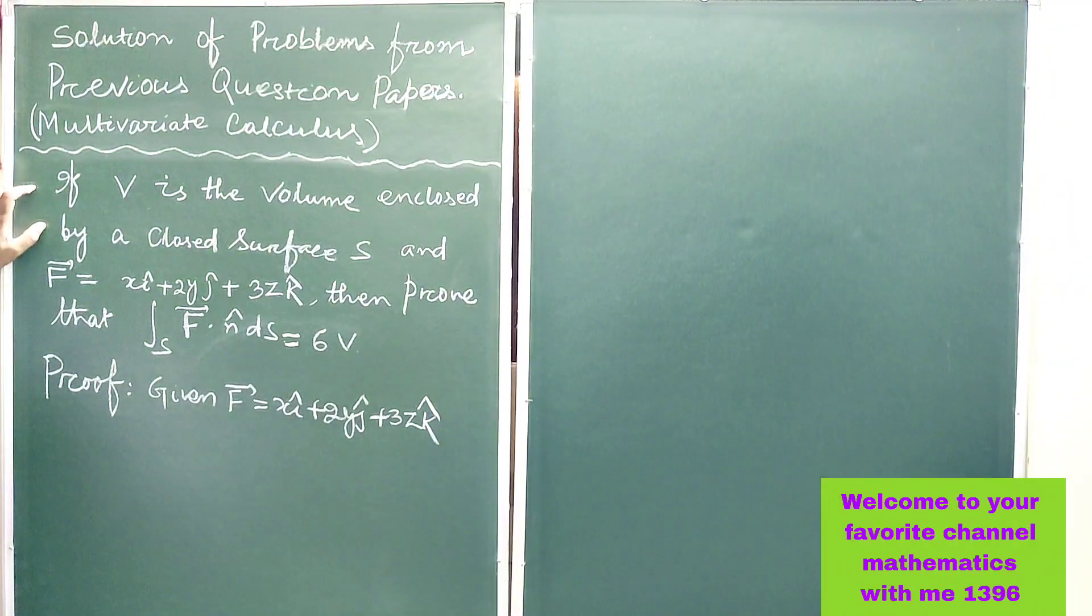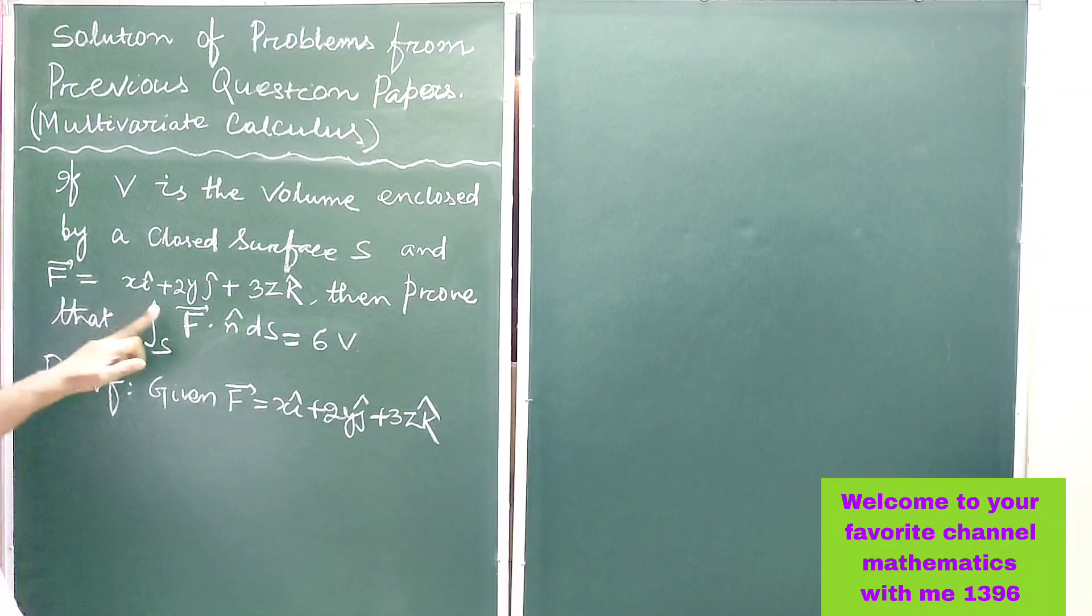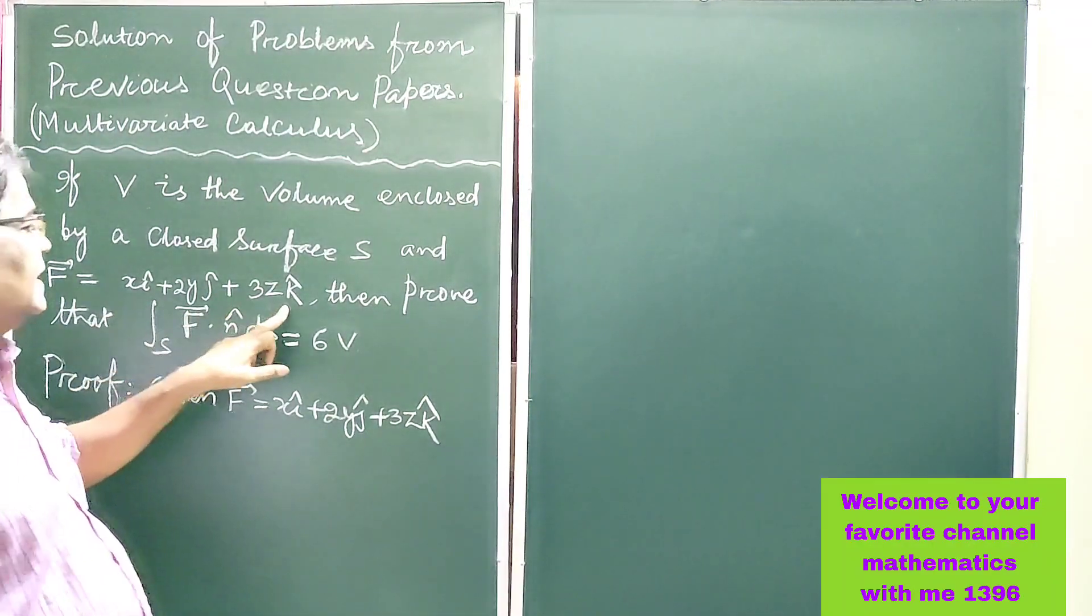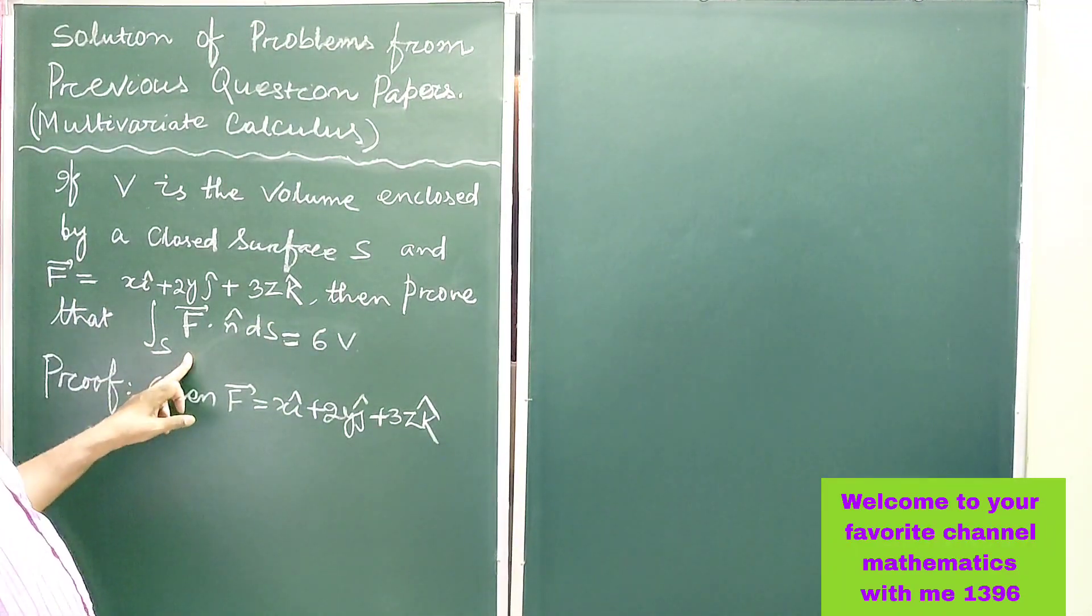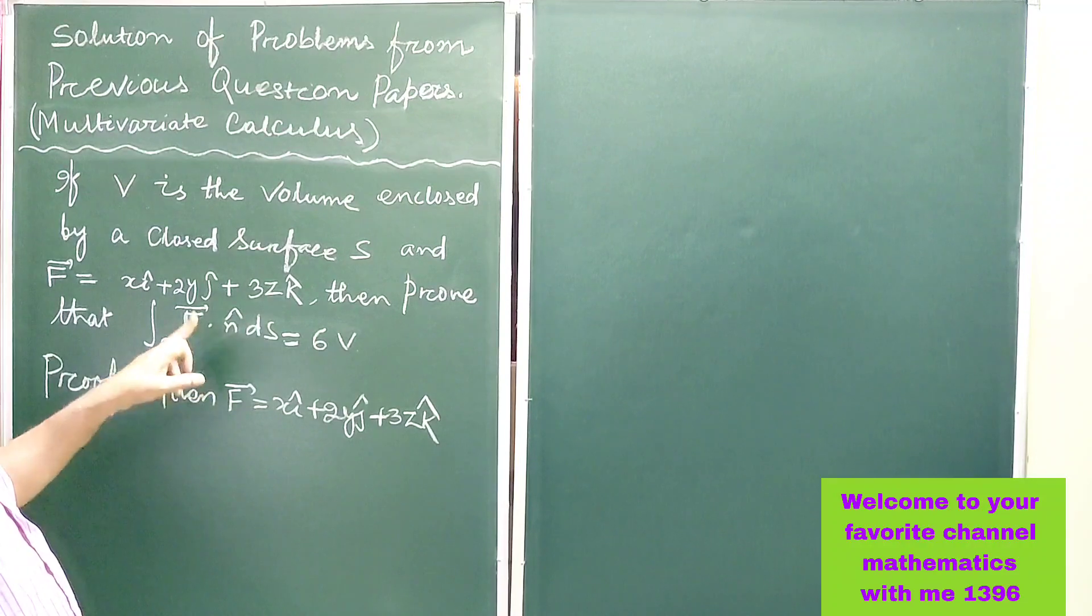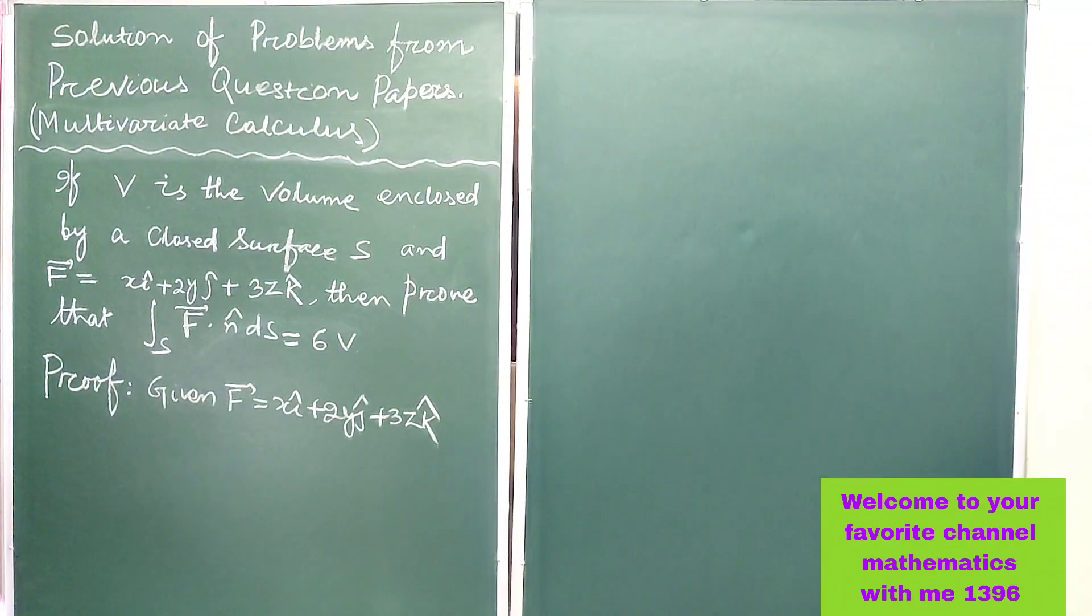The question is: if V is the volume enclosed by a closed surface S and vector F is equal to x i cap plus 2y j cap plus 3z k cap, then prove that integration over S of vector F dot n cap dS is equal to 6V.